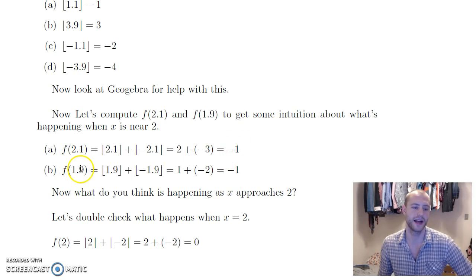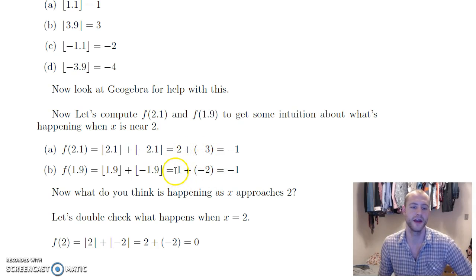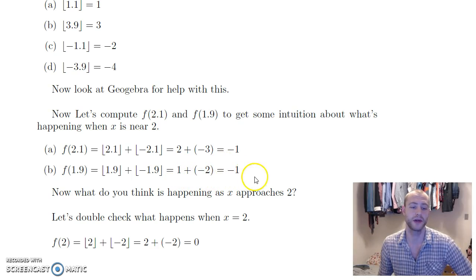Same thing here — floor(1.9) plus floor(negative 1.9). The integer to the left of negative 1.9 is negative 2. The integer to the left of 1.9 is 1. So f(1.9) is also negative 1. I wrote Stephen Hawking a handwritten letter to see if he could help with that calculation, and he was able to tell me it's negative 1.